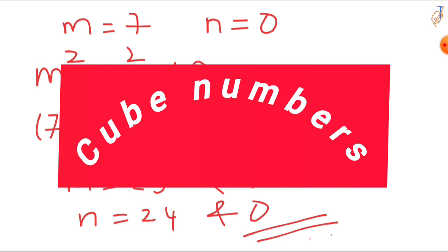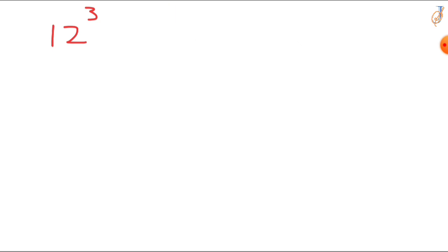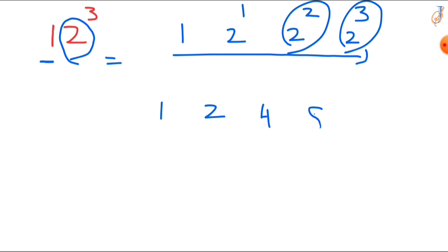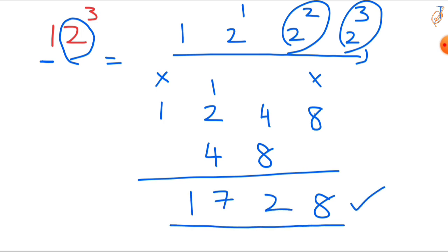Now let's learn a trick for cube numbers like 12 cube, 13 cube, 14 cube, and so on. Take 12 cubed. The first digit is 1 — just take 1. For the remaining digit 2, write: 2 power 1, 2 power 2, 2 power 3. That gives 1, 2, 4, 8. The second step: skip the first and last digit, and double the middle digits individually — 2 doubled is 4, 4 doubled is 8. Adding: 8, 8 plus 4 is 12, carry 1, so 1728. So 12 cubed is 1728.